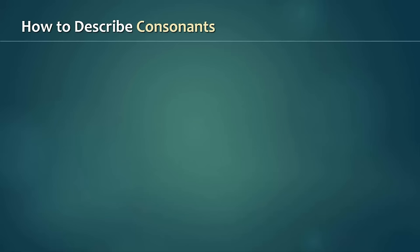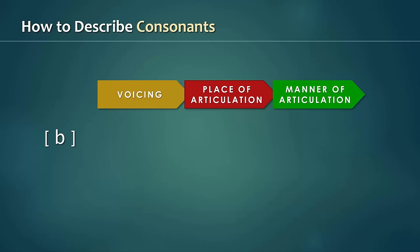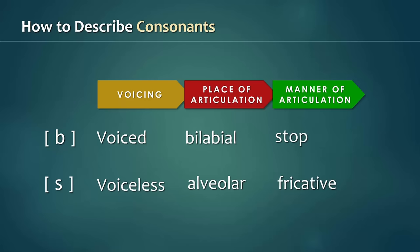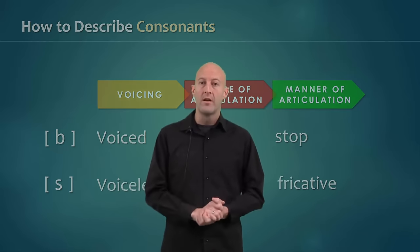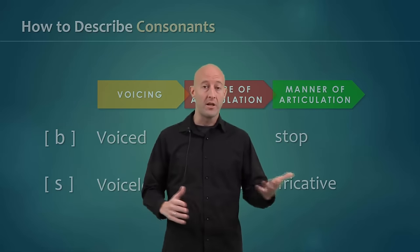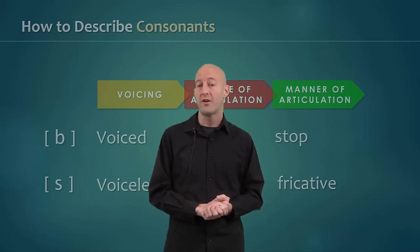Okay, we've discussed these three criteria for describing consonant sounds: voicing, place of articulation, and manner of articulation. And when linguists talk about a consonant sound, they do so in that order. So, for example, the sound b is considered a voiced bilabial stop. S is a voiceless alveolar fricative. That's it for this video. Thanks so much for watching. Please check out our other videos, including articulatory phonetics and vowels, and also how to navigate the International Phonetic Alphabet.